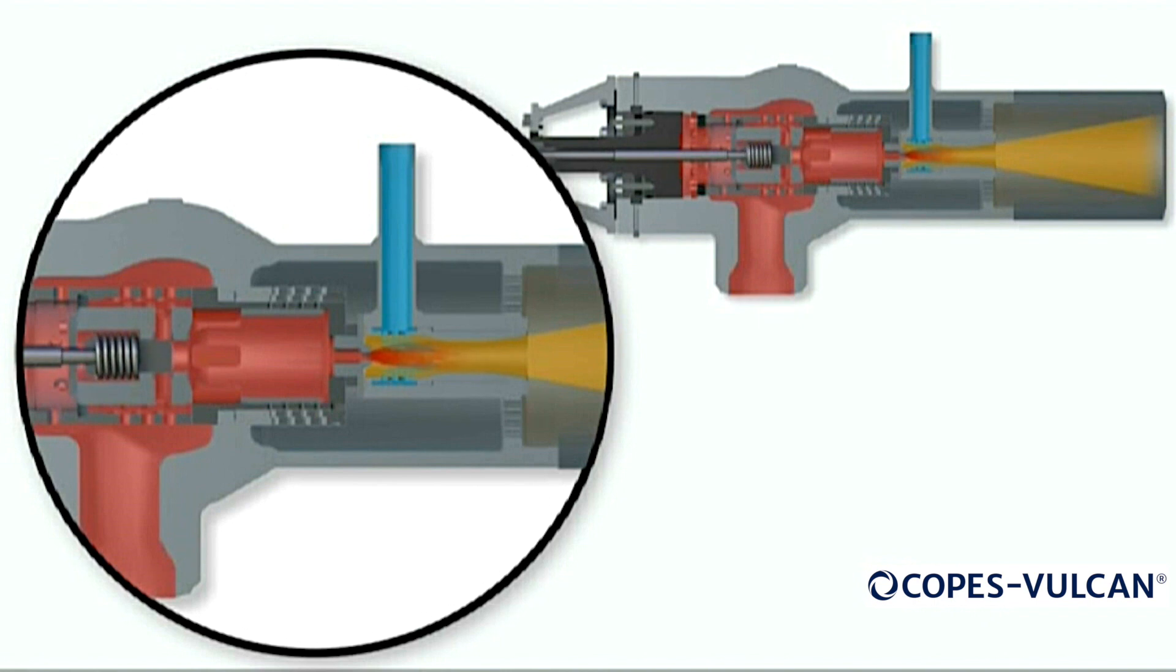At this point, full inlet steam pressure is applied to the top of the main cage, and the underside of the cage decays to downstream pressure. Effectively, the trim is now unbalanced. This unbalanced force significantly augments the seat contact load, resulting in a very tight and repeatable shutoff.